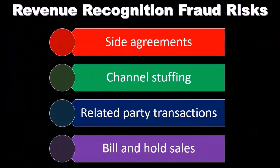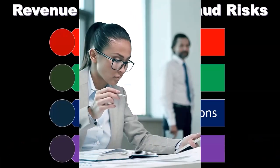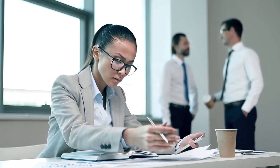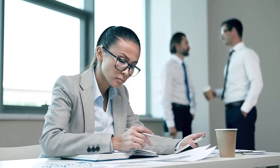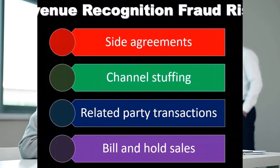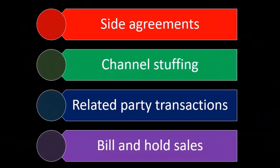Bill-and-hold sales are sales where the customer agrees to purchase the goods but the seller retains physical possession until the customer requests shipment. You can imagine this happening at the end of the year — a sale is agreed upon but the company is holding on to the inventory and doesn't have to actually distribute it until after year end.